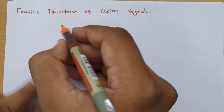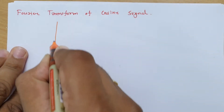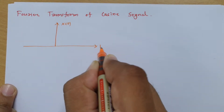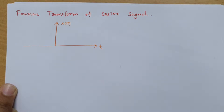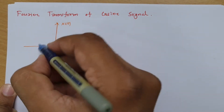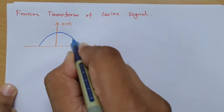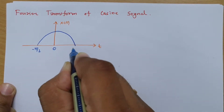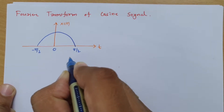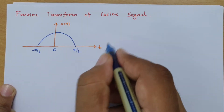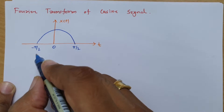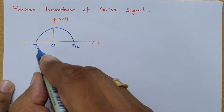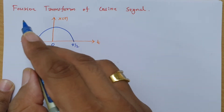So if I consider the cosine signal x(t) varying with respect to time t, then graphically you can see the cosine function will look like this. Here that is 0, this will be minus π/2 and plus π/2. The cosine function continues beyond, but I will be considering the range from minus π/2 to plus π/2 for calculating the integration for the Fourier transform.